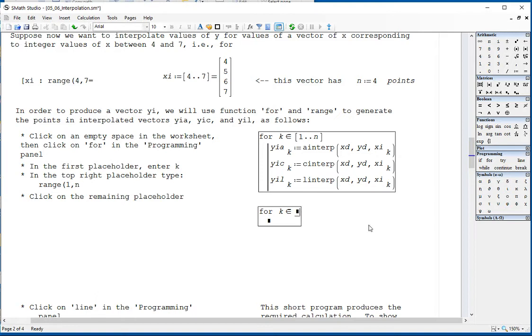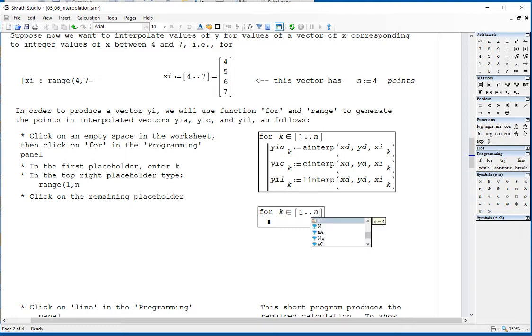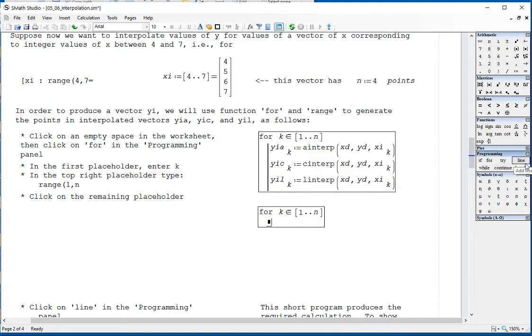So in this placeholder, I'm going to type range, parentheses, 1 comma n. And that will give me my range of value of 1 to n. Since I want to produce three results here, what I'm going to do here is click on this spaceholder and click on the line function for programming. Click a little bit to the left of this one and find this. Let me try that again.